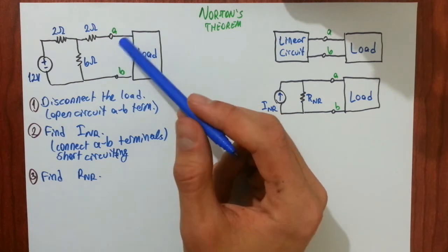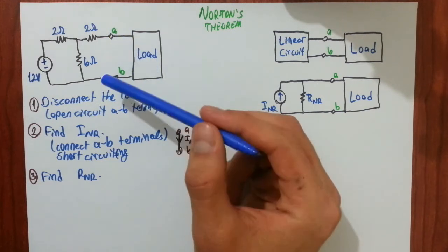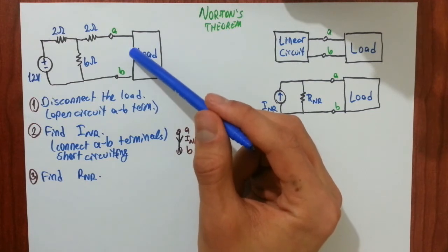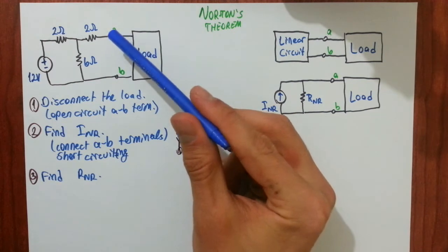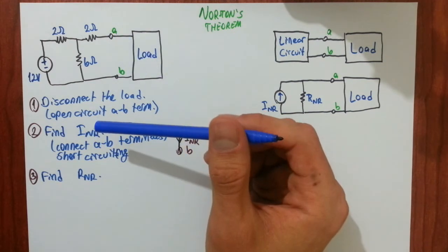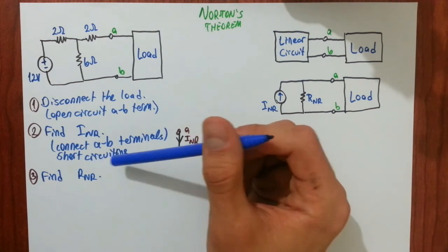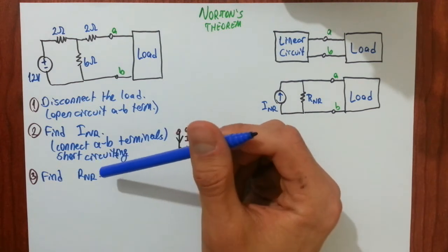you will connect a test voltage source. And you will find current flowing through that source. You will divide voltage value of that test voltage source into current flowing through that source. And that will be your RNR, Norton equivalence resistance.